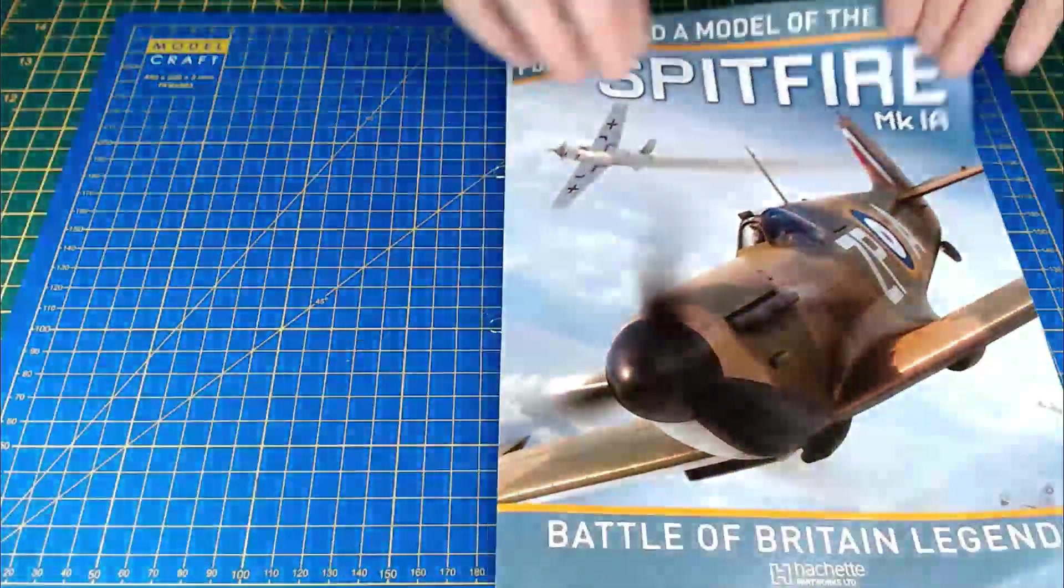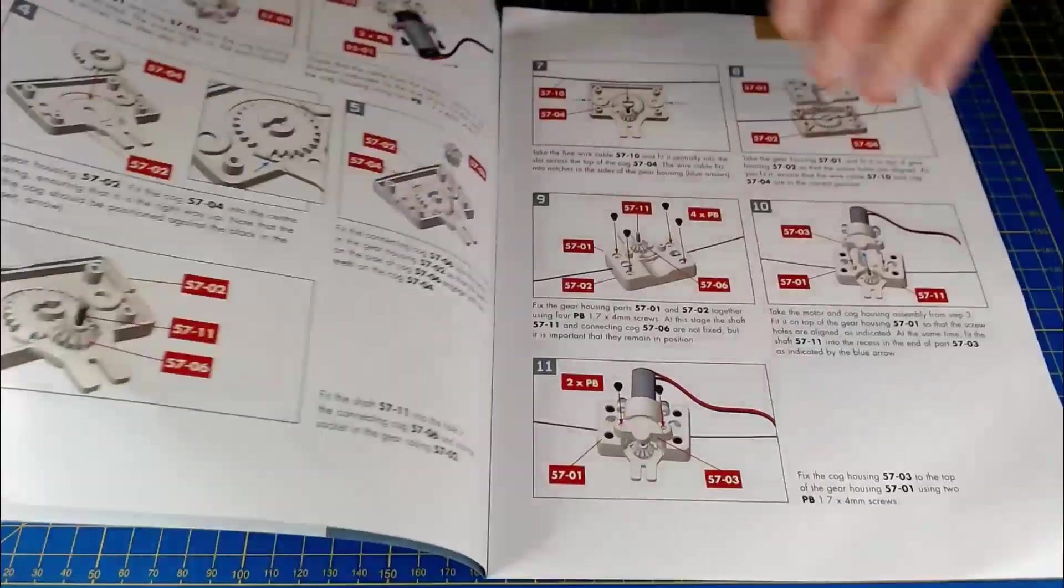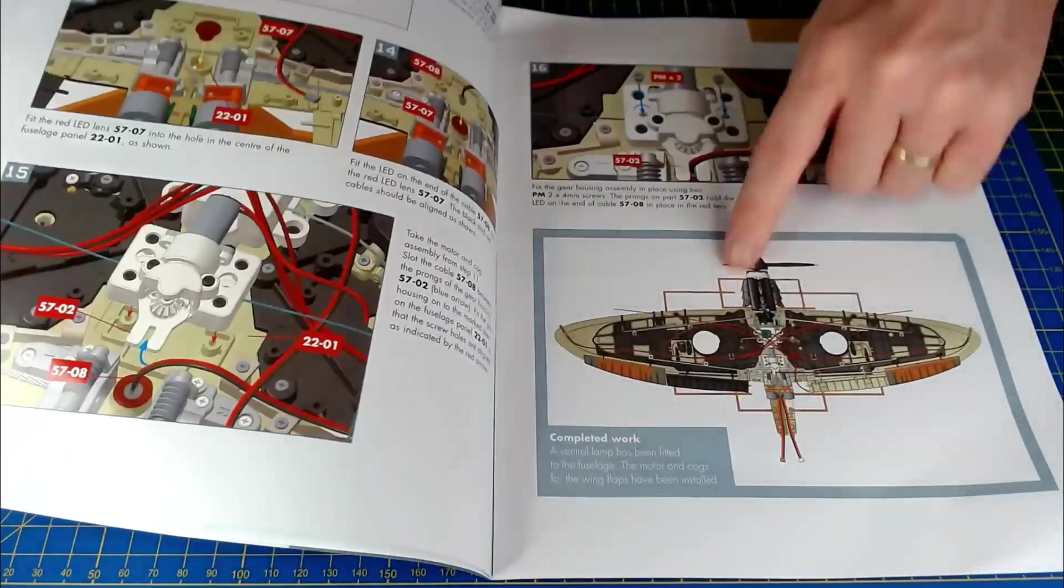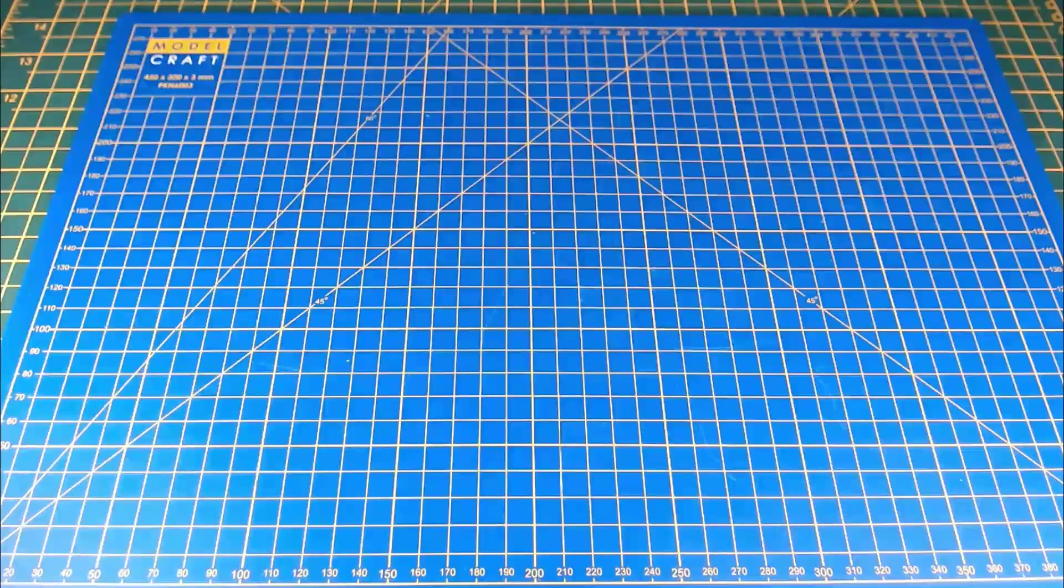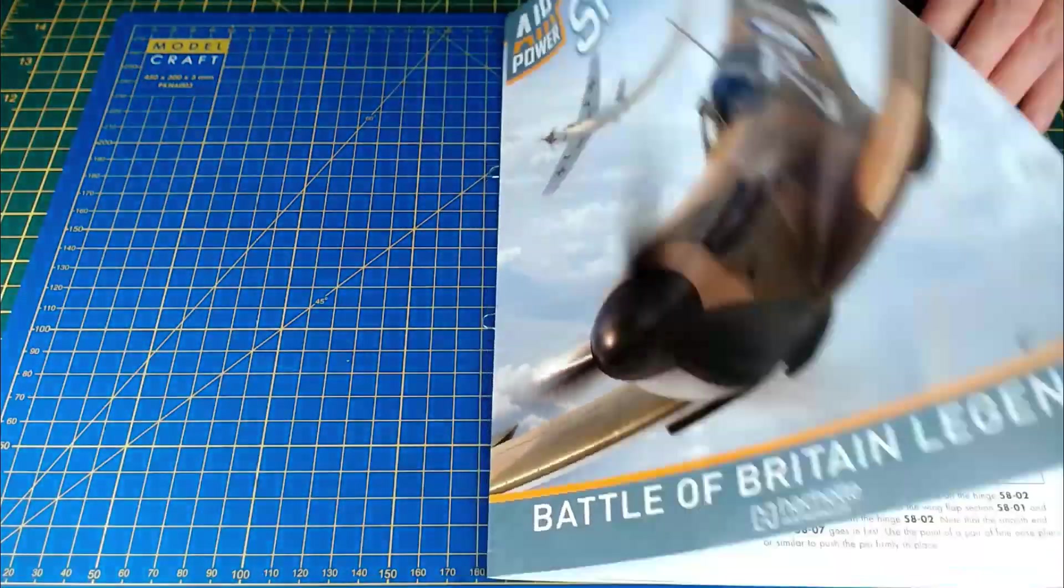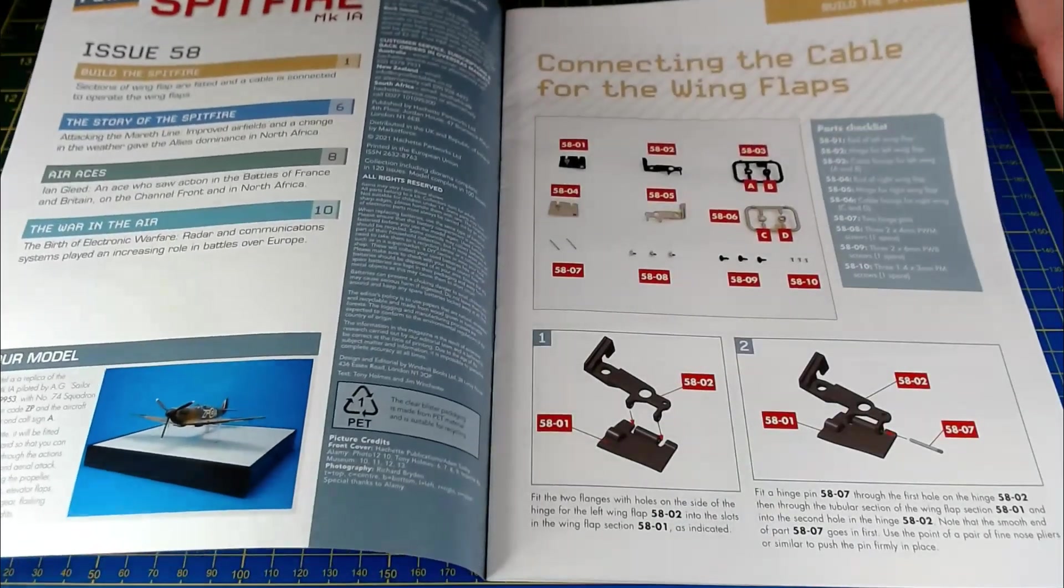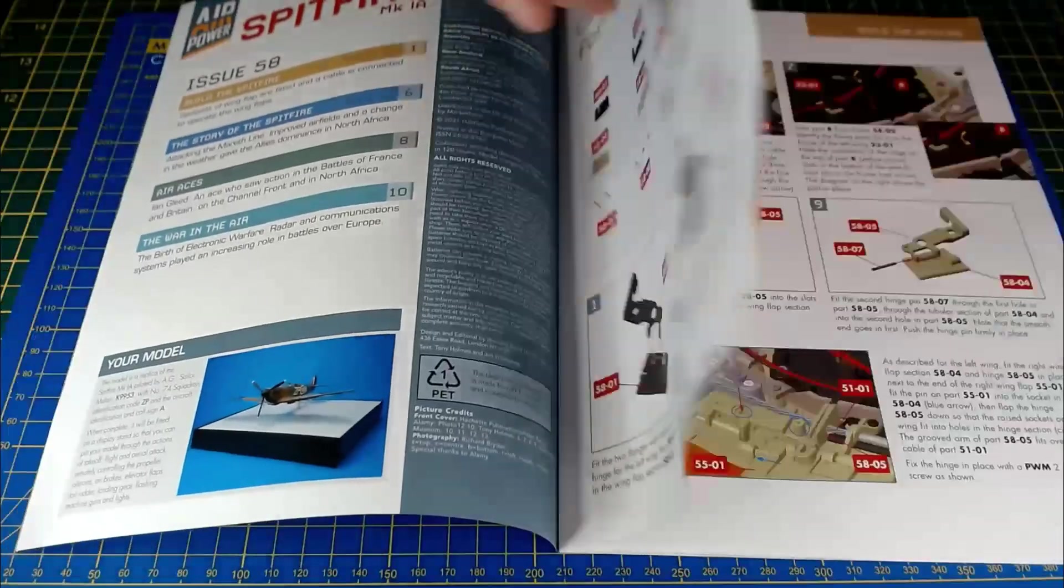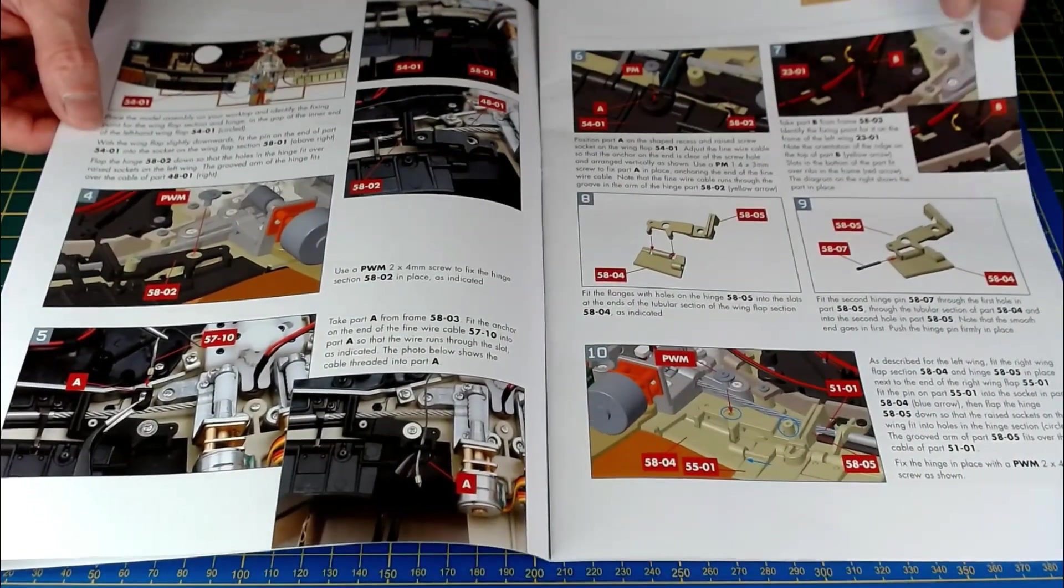Okay, so that was issue 57 there. Yeah, fitting that motor for the wing flaps and that LED. Not a bad issue at all. Issue 58 is coming up soon. What have we got? Connecting the cables for the wing flaps. So we've put the motor on, and now it looks like we're going to be putting on the actual operating cables. Quite an in-depth issue by the looks of things. You know, lots of instructions in there.